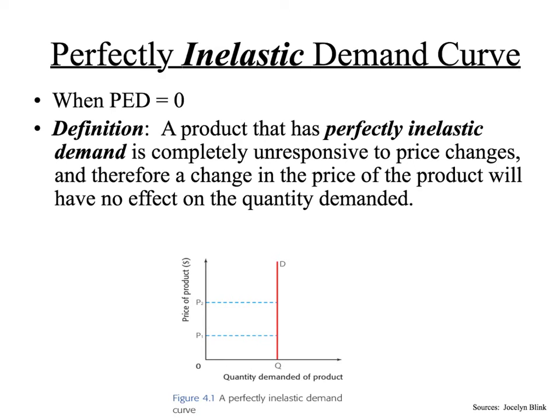Those are the five values for price elasticity of demand: elastic, inelastic, unit elastic, perfectly elastic, and perfectly inelastic.